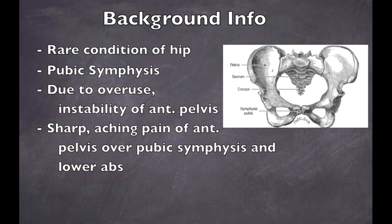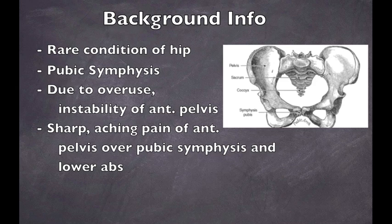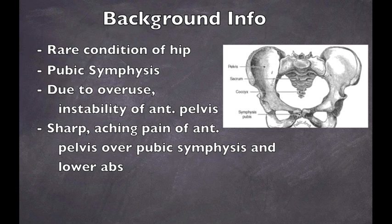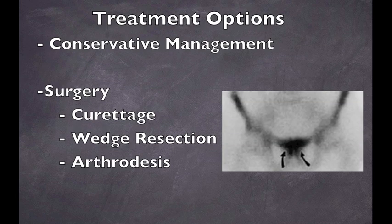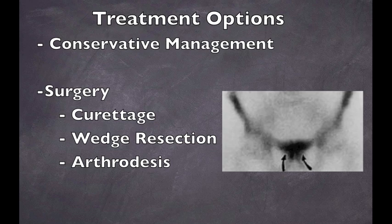Here is a quick overview of what osteitis pubis is. As mentioned before, it is a rare condition of the hip, more specifically the pubic bone and the pubic symphysis. It is mainly inflammation of the pubic symphysis and is largely caused by overuse and instability of the anterior portion of the pelvis. Symptoms include sharp aching pain of the anterior pelvis over the pubic symphysis and lower abs. This pain may also radiate into the adductors, sometimes going into both legs. The most common treatment options include conservative management and surgery, and there are 3 types of surgery: curatage, wedge resection, and arthrodesis.